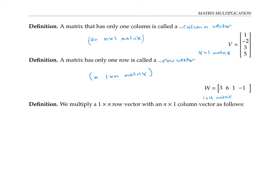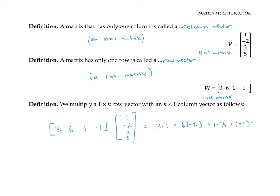I'm going to show you how to multiply a one by n row vector with an n by one column vector, starting with this example. To multiply this one by four row vector by a four by one column vector, we multiply the first entry of the row vector with the first entry of the column vector, the second entry with the second, and so on, then add those products up. So we compute three times one, plus six times negative two, plus one times three, plus negative one times five, which adds up to negative 11. I like to visualize this as tipping the row vector on its end and multiplying numbers at the same height with the column vector.